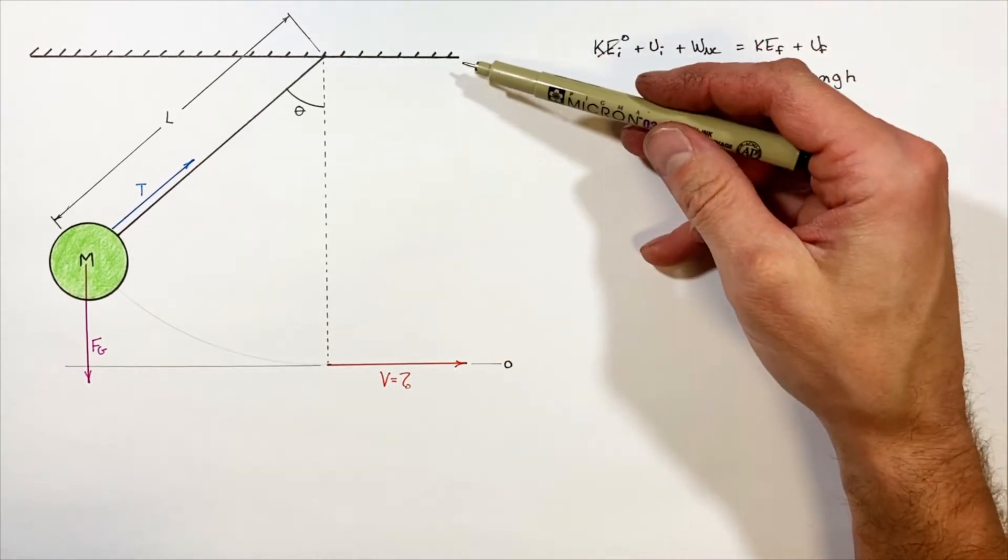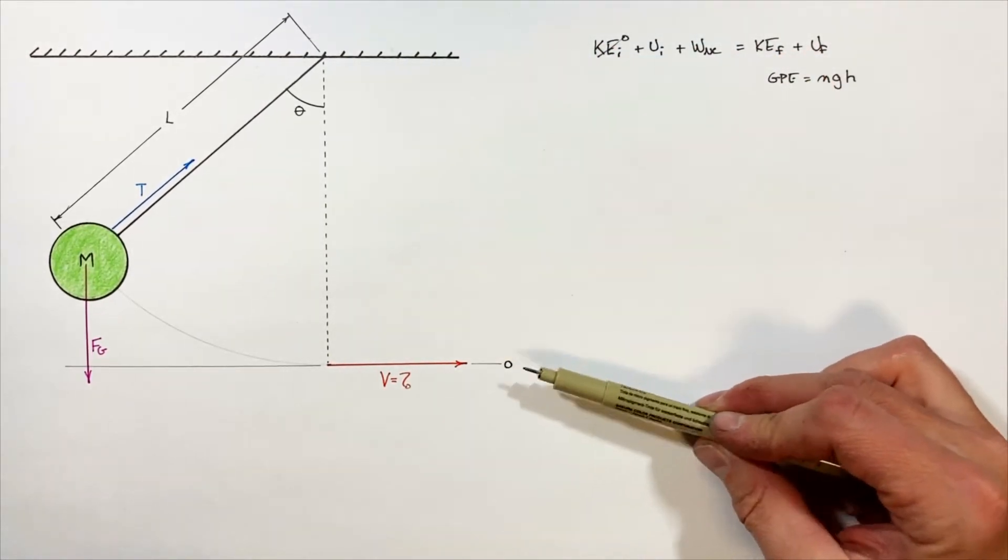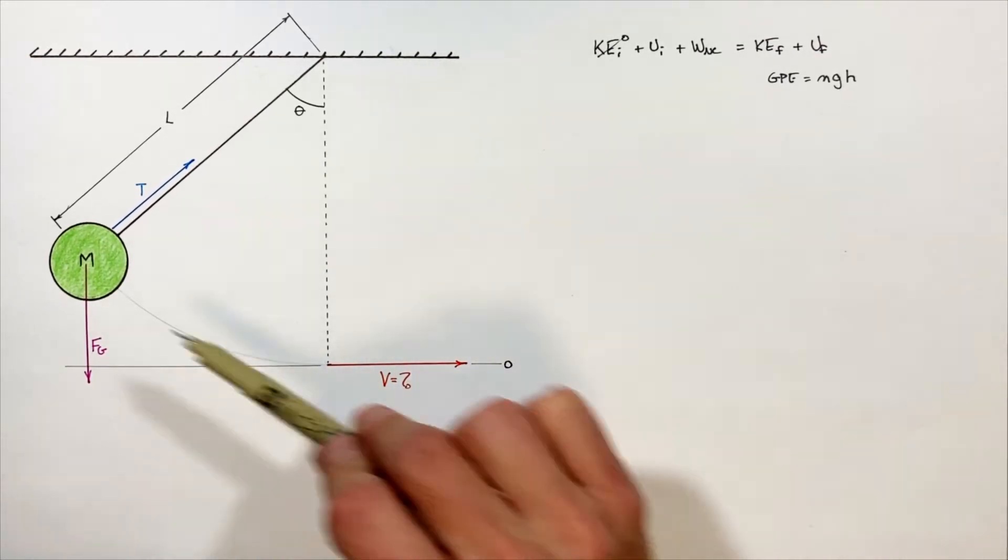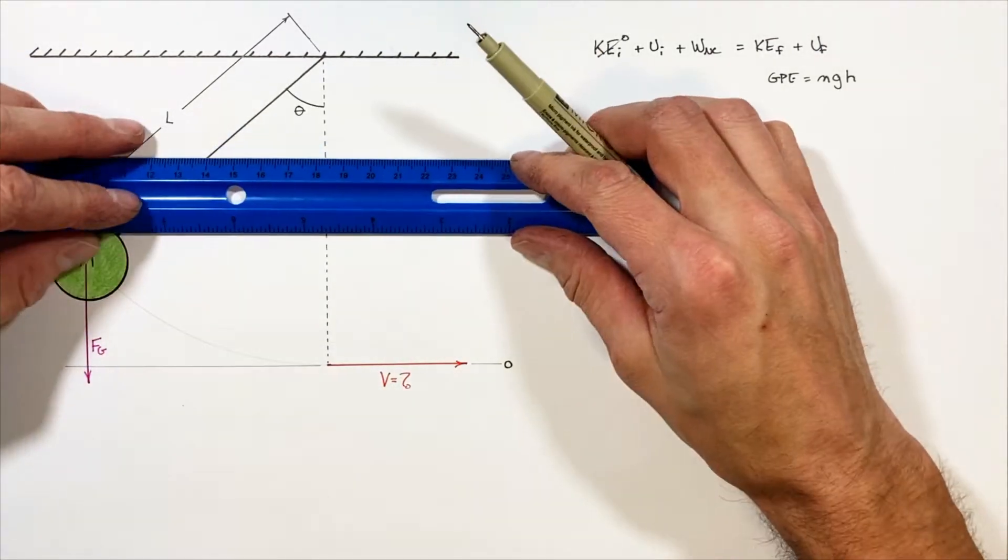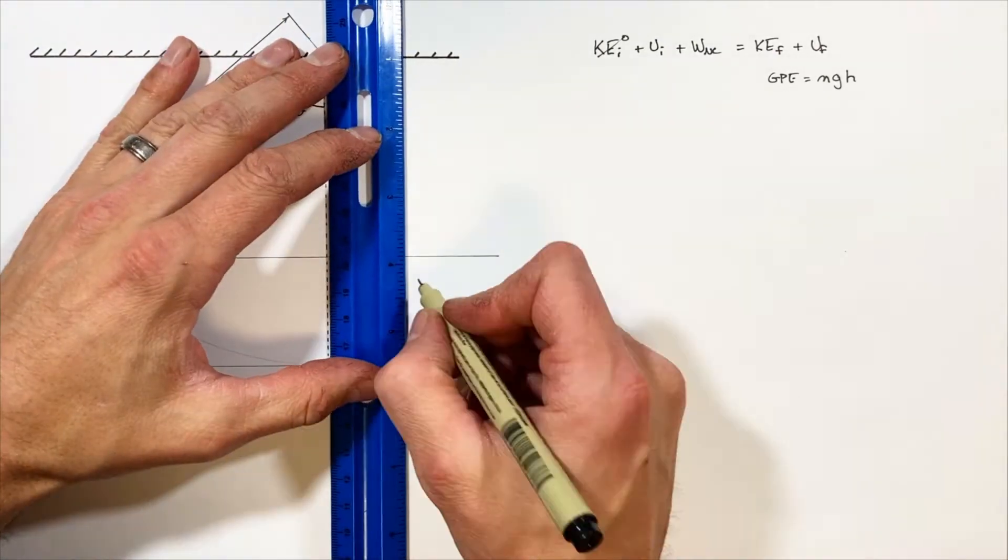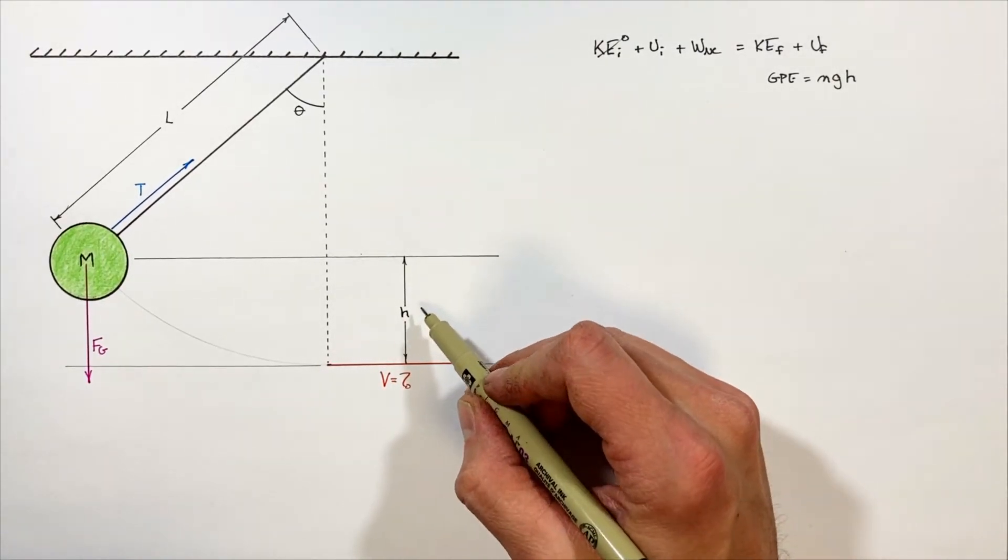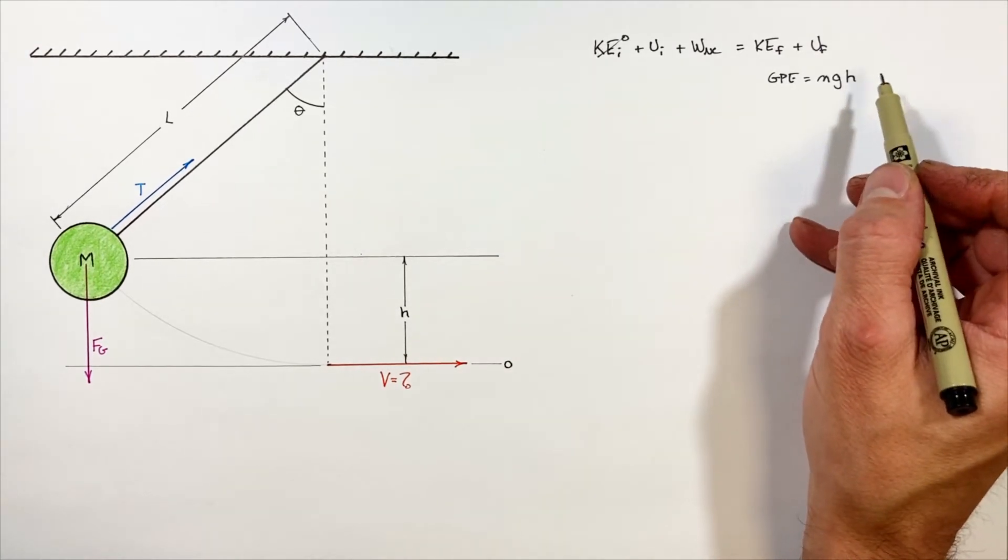I think it's easiest to just say the lowest point is a height of zero. You could call any position you wanted a height of zero, I just think this is the easiest. The height H is going to be the vertical distance between a reference height and the height of this mass.